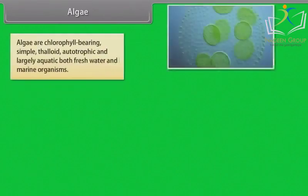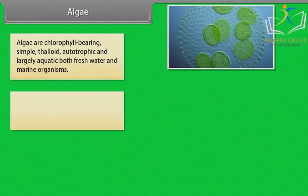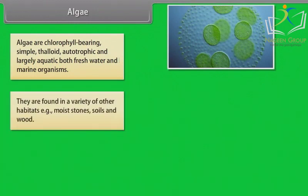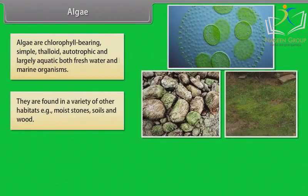Algae are chlorophyll-bearing, simple, thaloid, autotrophic, and largely aquatic — both freshwater and marine organisms. They are found in a variety of other habitats as well, such as moist stones, soils, and wood.